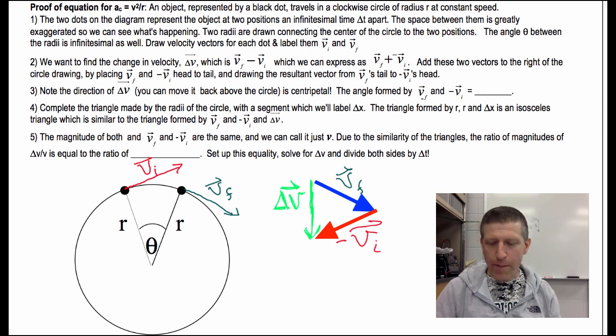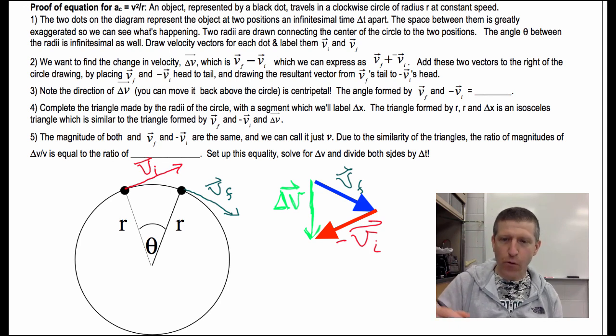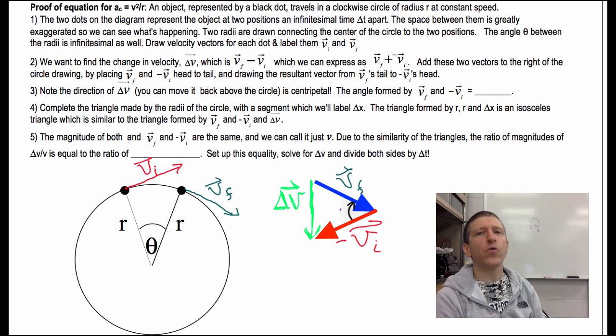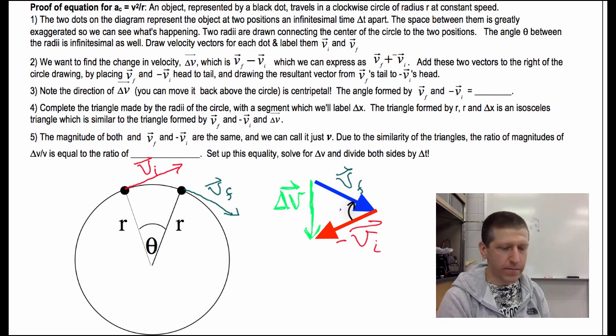Now, the angle formed by V final and negative V initial. What I'm looking for now is what is this angle right here? What's that angle right there between those two? And why is that true? Give you a hint. Between these two radii, the angle is theta. Now, that's an infinitesimal. I've drawn it way too big here. But if this is theta between this R and this R, and V initial is perpendicular to this R, and V final is perpendicular to this R, what must be the angle between these two things?